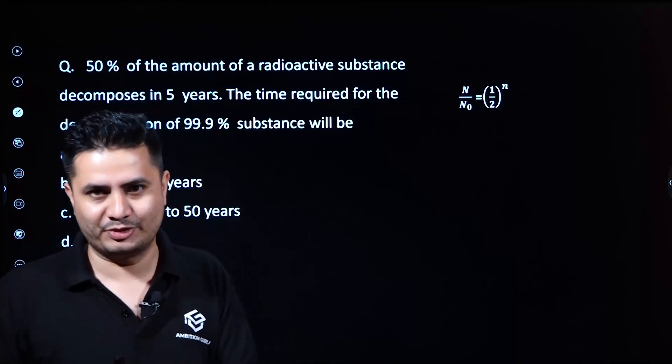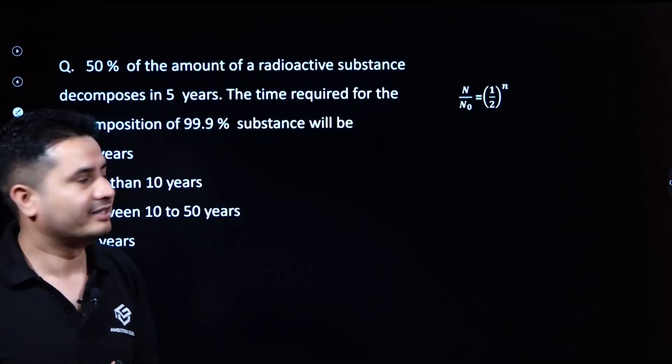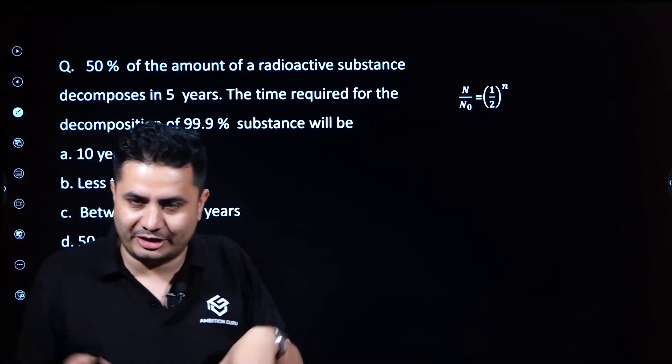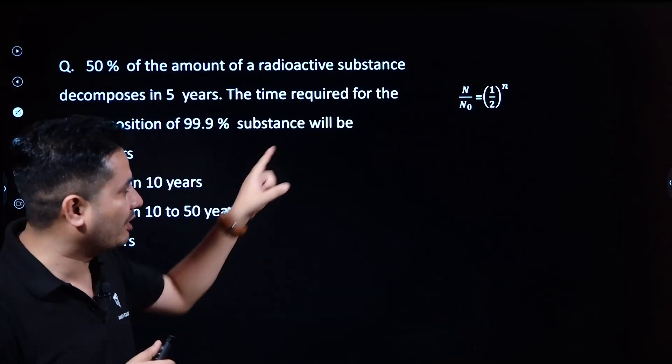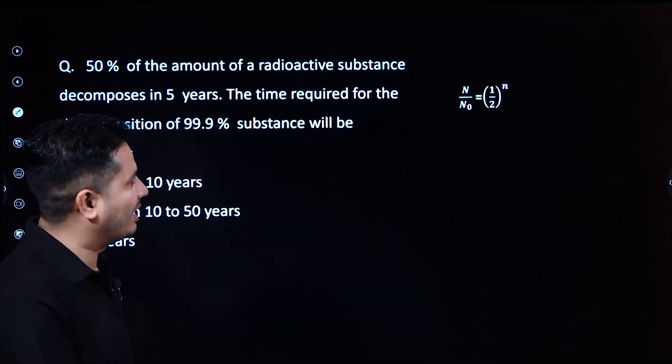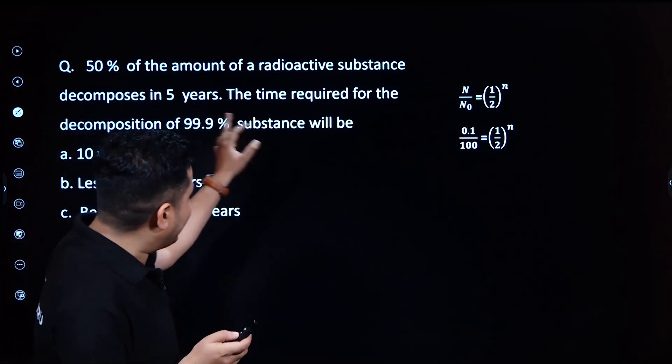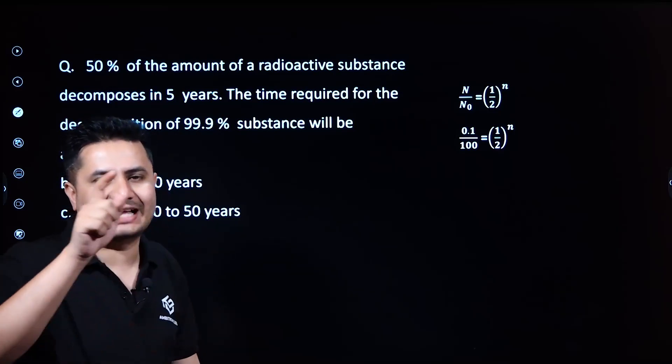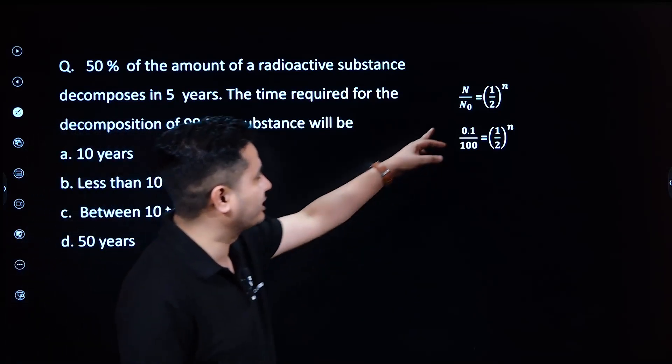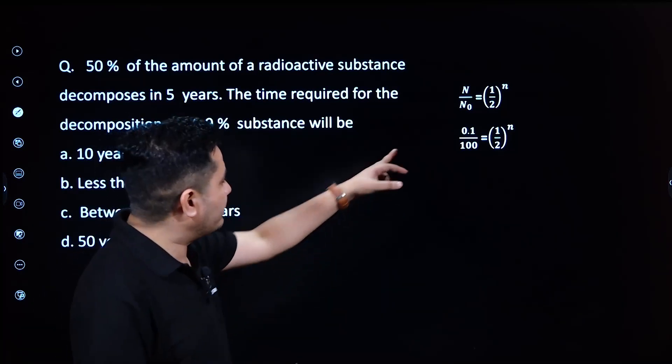N₀ is the initial concentration or amount of the substance, and N/N₀ is the fraction of the undecayed substance, which equals (1/2)^n. If 99.9% substance decomposes, then 100 minus 99.9, that is 0.1 percent, remains undecayed.